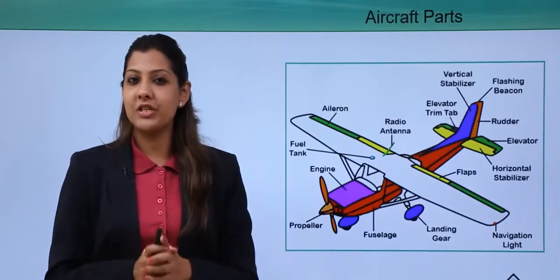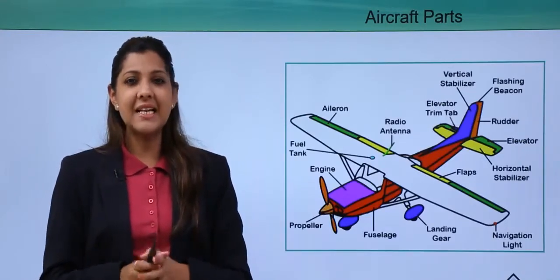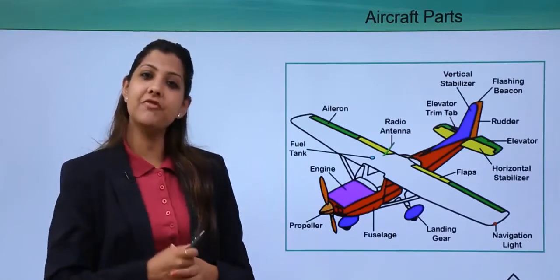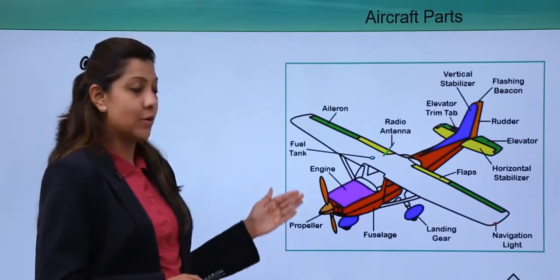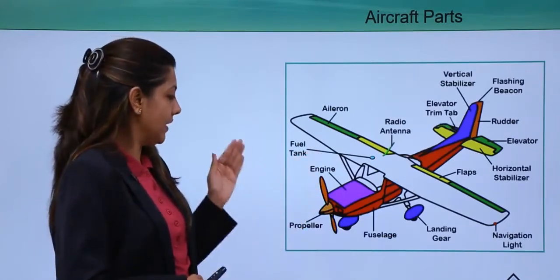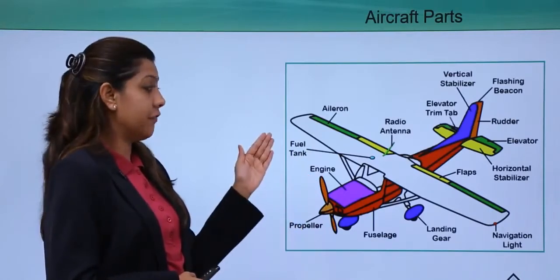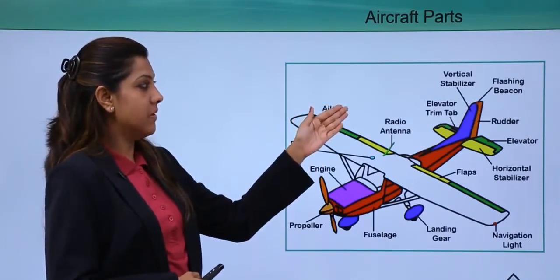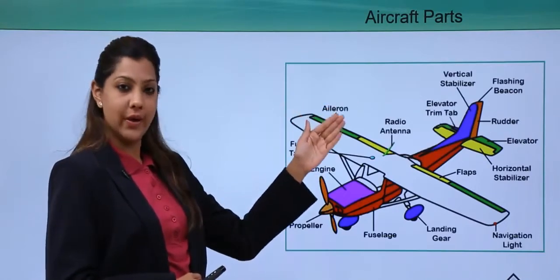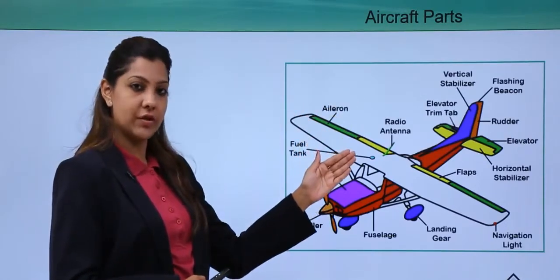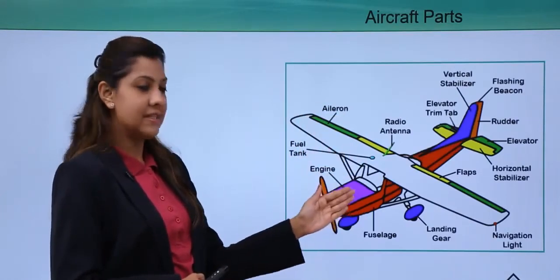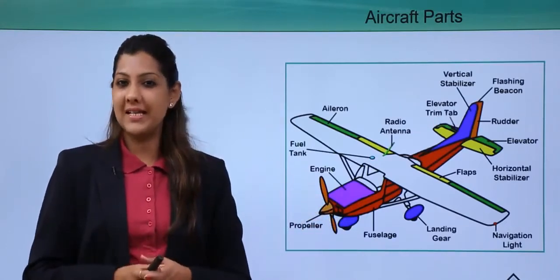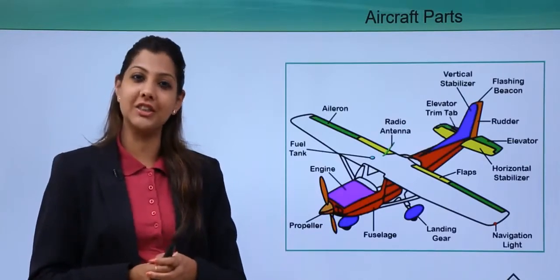Now we'll look at the exterior parts of the aircraft. The parts include the propeller, engine, fuel tank located at the wing, ailerons, radio antenna, elevator trim tab, vertical stabilizer, flashing beacon, rudder, elevator, horizontal stabilizer, flaps, navigation light, landing gear, and the fuselage — which is the body of the aircraft. We will explain what each part does and how it functions.